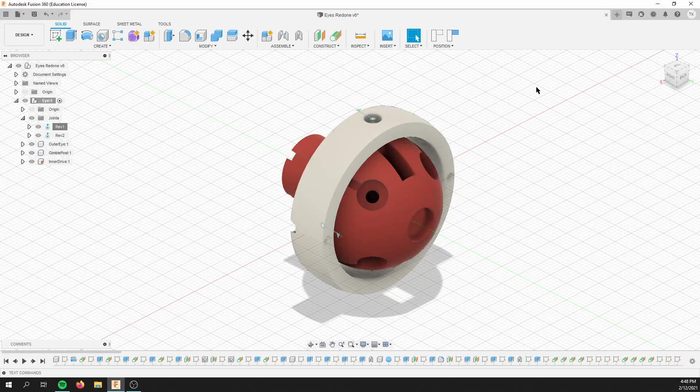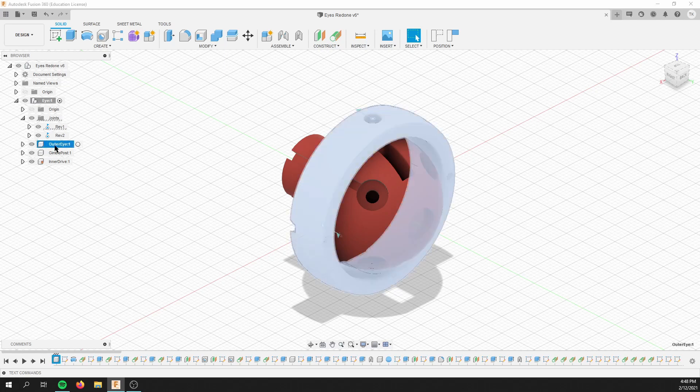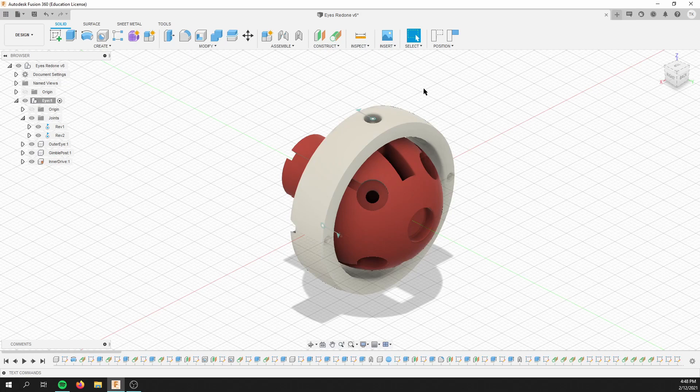Alright, let's look at the CAD model then. So there are three main parts. The outer eye, the post here, and the inner eye. So the outer eye is the part you'll actually see. That's the part that will move around. And it is connected to the gimbal post with a revolution.